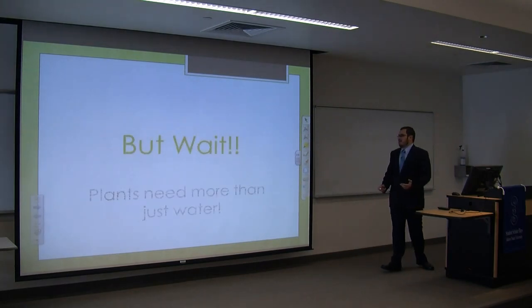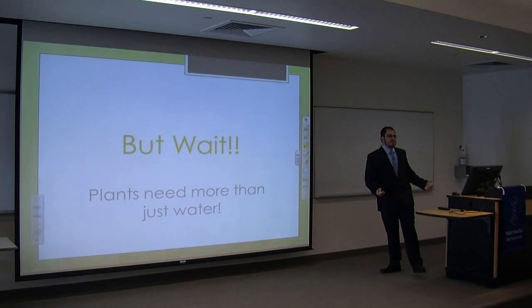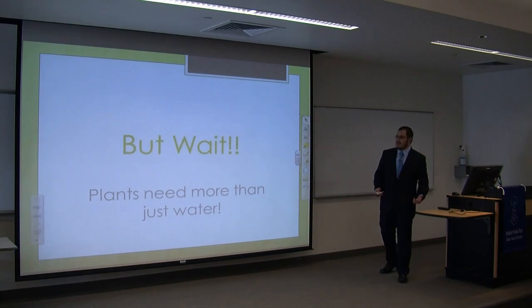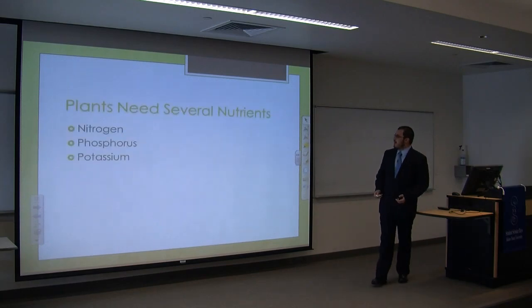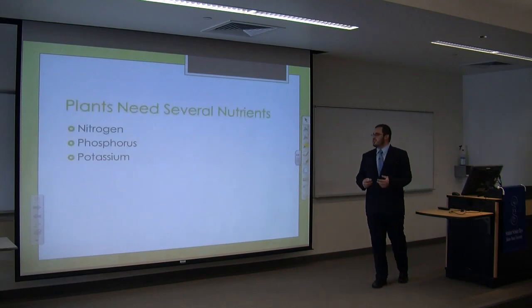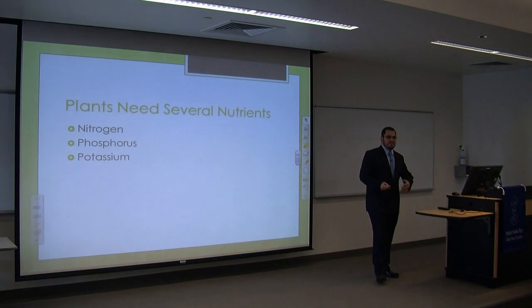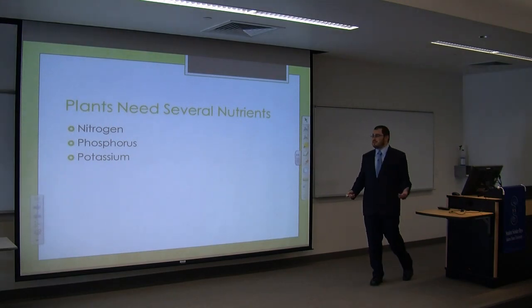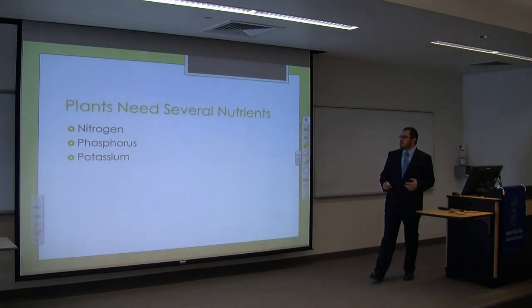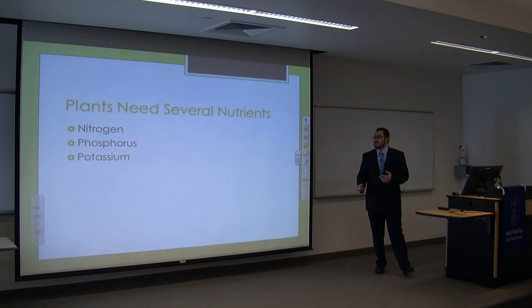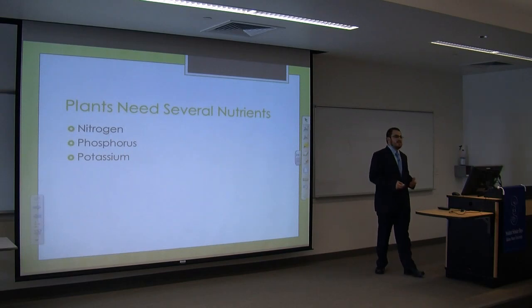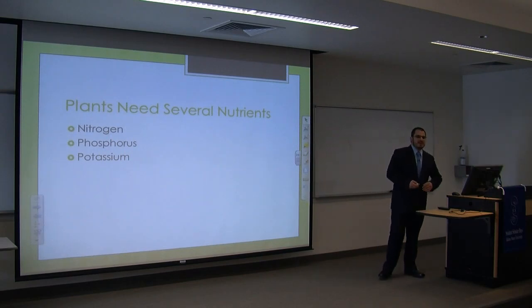But plants need more than just water. There are several nutrients that plants need, from micronutrients to macronutrients, but the three main ones are nitrogen, phosphorus, and potassium.